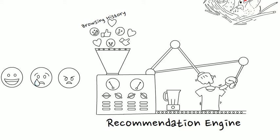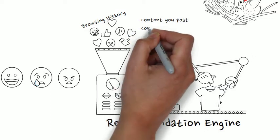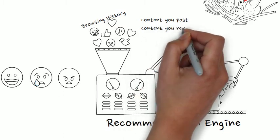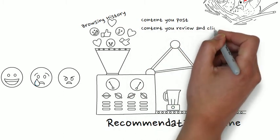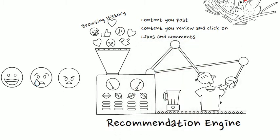The recommendation engines collect data on the content you engage with, from pinning a picture on Pinterest to commenting on an Instagram post, and then they display material that they anticipate you will enjoy. This material can be either targeted advertising or other people's posts that are perceived to be relevant.